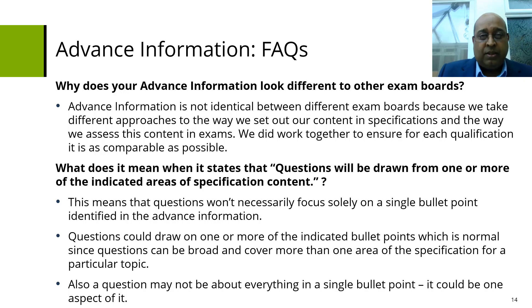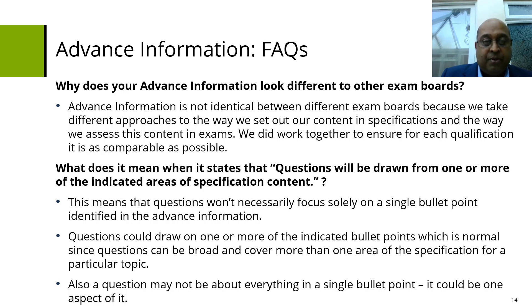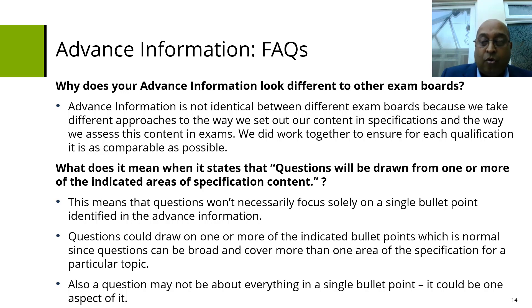Why does our advanced information look different to other exam boards? The exam boards did work together to ensure the qualifications are as comparable as possible, but there'll be some slight differences in the way it is presented because we may have laid out our content differently in our specifications. What does it mean when it states that questions will be drawn from one or more of the indicated areas? This means questions won't necessarily focus solely on a single bullet point - they could draw knowledge from one or more of the indicated bullet points and could be very broad questions. That is why it's so important not to narrow teaching and learning and to try to cover all of the content.